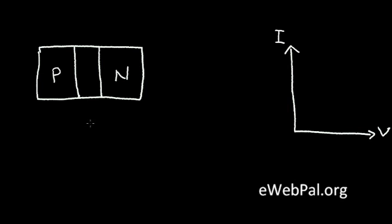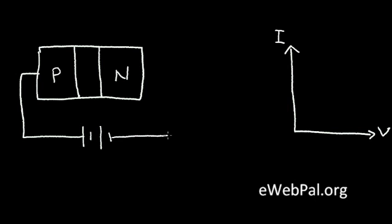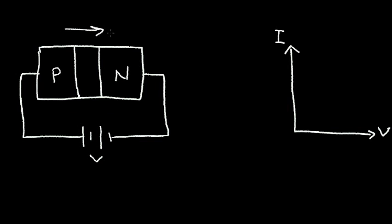Now, let's analyze what happens in this P-N junction when I apply an external voltage. Here I have a battery. I'm going to connect the positive terminal to the P region and the negative terminal to the N region, and I'm going to plot the current in this diode versus the battery voltage, V. If I start at zero volts for the battery voltage, I'll be operating at a point on the current versus voltage curve.